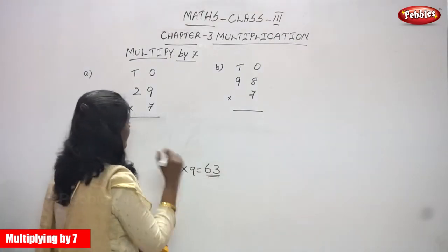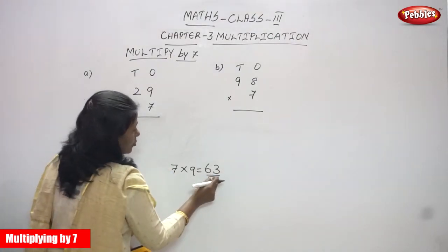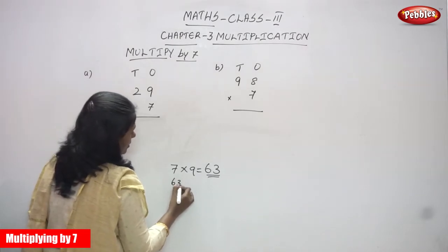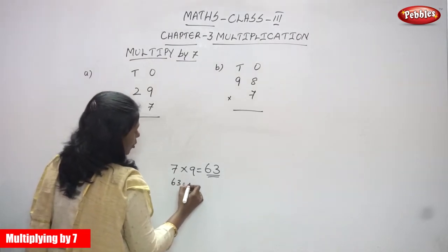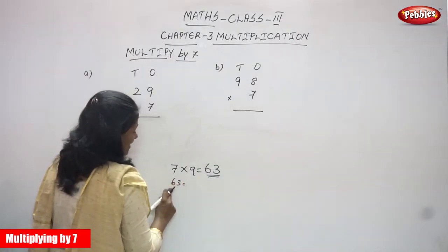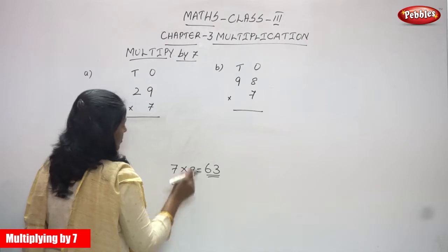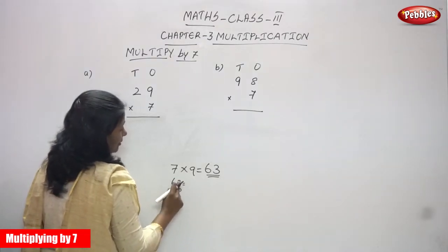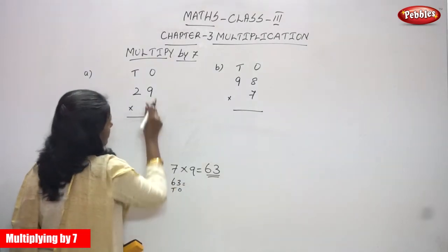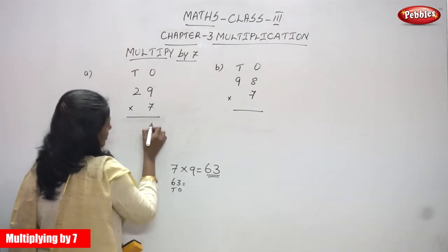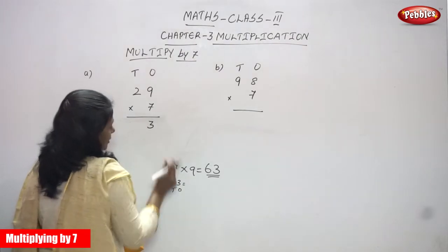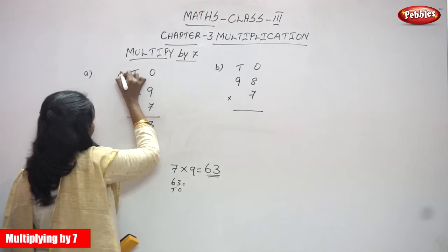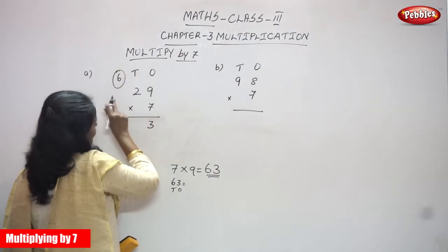63 means you have 3 ones and 6 tens. So I have taken the 3 here because it's the ones place — we write the 3 in the ones place. The remaining 6 tens goes to the tens place value.